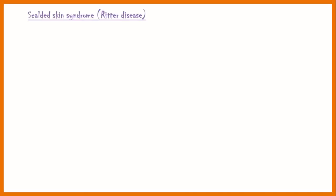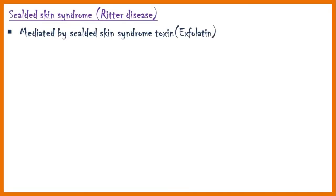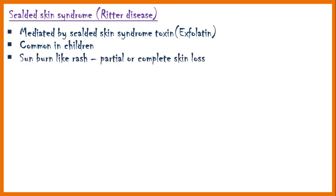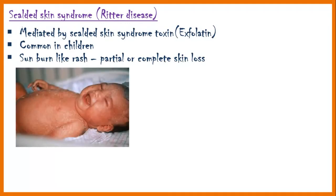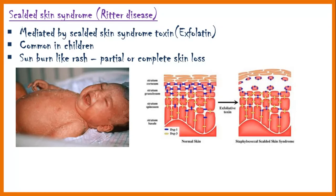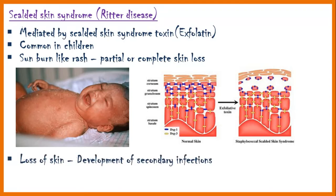Scalded skin syndrome, also known as Ritter disease, is mediated by the scalded skin syndrome toxin, also called exfoliatin toxin. It most commonly affects young children. There is a sunburn-like rash that spreads over the entire body, which ultimately causes partial or total skin loss. The desquamation occurs at the level of the granulosa layer of the epidermis. Loss of skin may leave the child at risk of developing secondary infections.